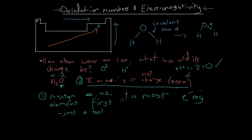So those are basically the two steps we follow. We assign the oxidation number to the most electronegative element first, based on whatever ion that electronegative element likes to form. Then we fill in the rest - continuing in order of electronegativity - such that the oxidation numbers equal the net charge of the compound. Here we have a neutral molecule, so all the oxidation numbers of the three atoms in this molecule have to sum to zero.